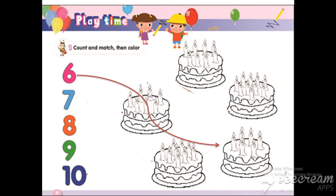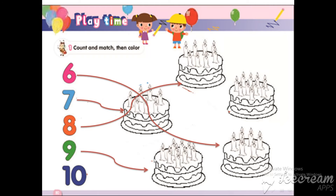How many candles are there? One, two, three, four, five, six, and seven. Match and color this candle. How many candles? One, two, three, four, five, six, seven, eight. Match with number eight and color this candle. Count with me: one, two, three, four, five, six, seven, eight, nine. Match and color this candle.